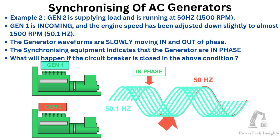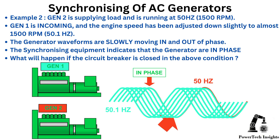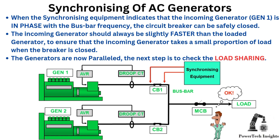Example 2: Gen 2 is supplying load and is running at 50Hz, 1500 RPM. Gen 1 is incoming, and the engine speed has been adjusted down slightly to almost 1500 RPM, 50.1Hz. The generator waveforms are slowly moving in and out of phase. The synchronizing equipment indicates the generators are in phase. When this occurs, the circuit breaker can be safely closed. The incoming generator should always be slightly faster than the loaded generator to ensure it takes a small proportion of load when the breaker is closed. The generators are now paralleled; the next step is to check the load sharing.